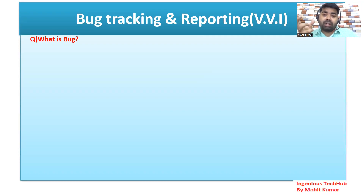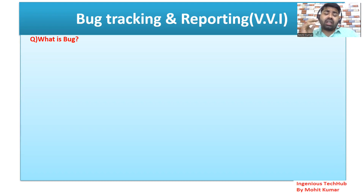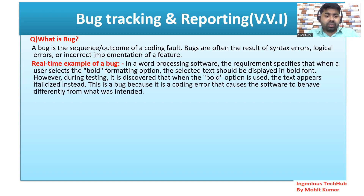Now we can understand what is a bug. A bug or issue - all are almost the same. When I say bug, we have some issue or problem with the code base. For example, if you are going to enter a valid username and password but still getting an error, it might be breaking the code, some logic is incorrect, syntax error, or they did not do unit testing properly. A bug is a sequence or outcome of a coding fault - bugs are often the result of syntax errors, logical errors, or incorrect implementation of features.